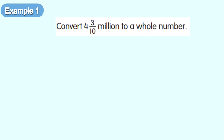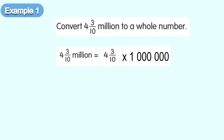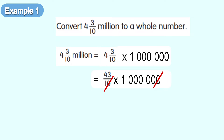Multiply 4 and 3 over 10 million with 1 million. Cancel the zeros. Now, 43 multiplied by 100,000. The answer will be 4 million 300,000.